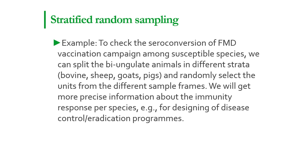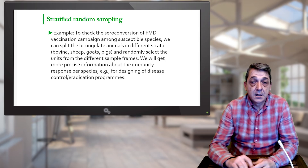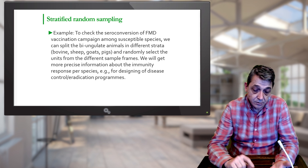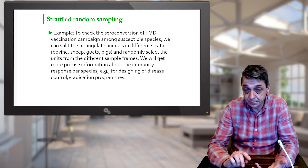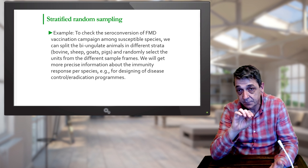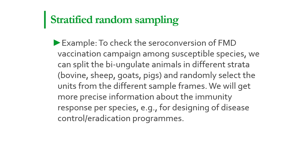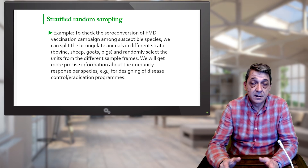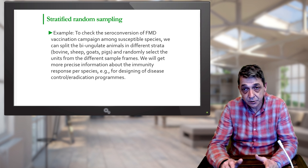For example, if we want to examine seroconversion of vaccination against foot and mouth disease in the susceptible population, we can make random sampling of all susceptible animals — which include pigs, sheep, goats and cattle — or we can make different strata: one stratum for cattle, one for sheep, one for goats, and one for pigs. We make random selection of animals within each stratum, and if the results are more scattered and heterogeneous in one group, we can increase the sample size just in that group. This gives us more precise data within each group and overall, which is very helpful in designing control strategies.